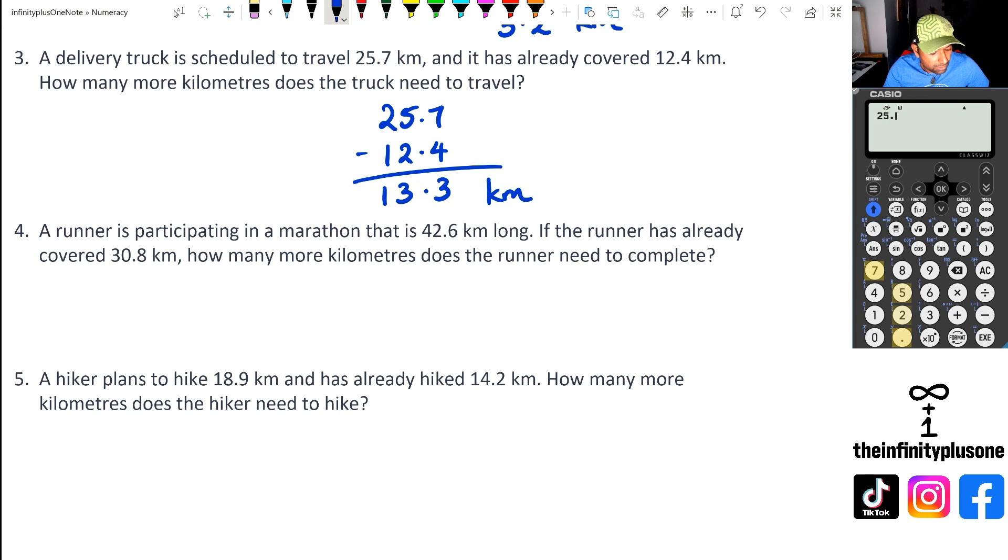So again, doing this in the calculator, we've got 25.7 take away 12.4, that's 13.3. Moving on to question four. Question four, 42.6. I'm sure the marathon is a bit shorter, but I could be wrong. You know, I am wearing a marathon hat here the last time I ran it, but was it 42.6? I need to check that because I can't remember.